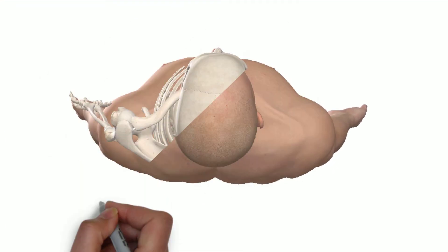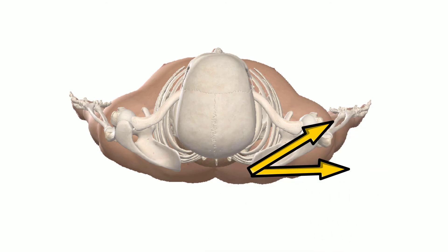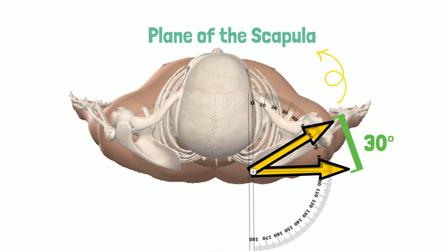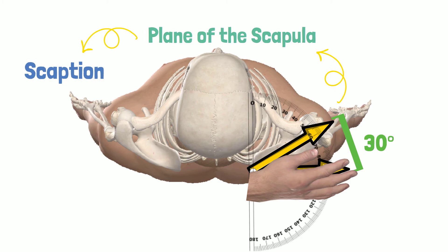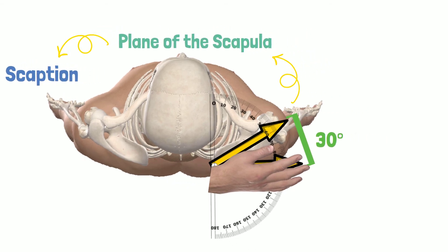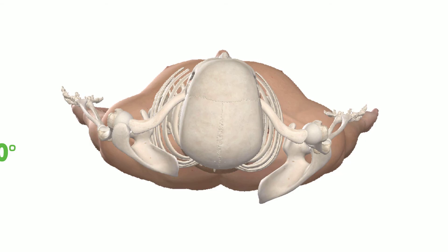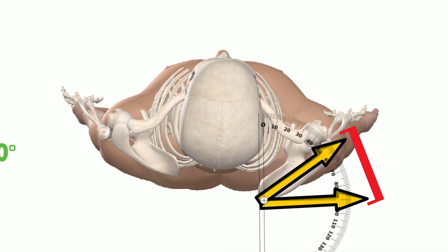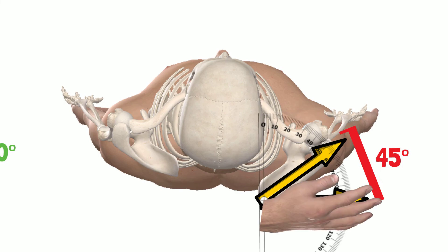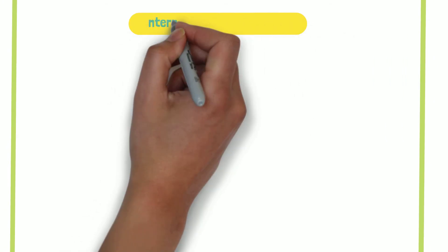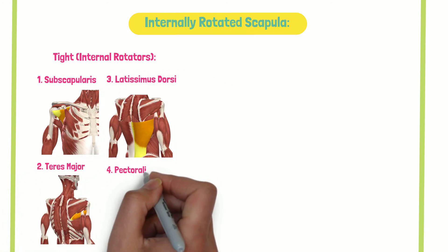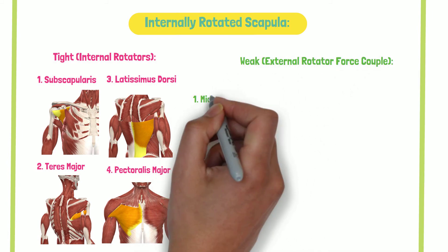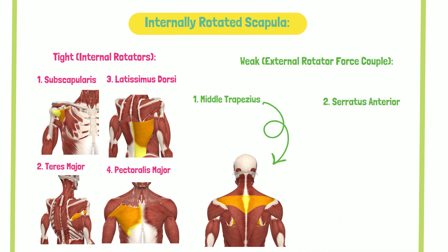Last but not least is the internal-external rotation of the scapula. The typical alignment of the scapula is 30 degrees of internal rotation — we refer to this alignment as the plane of the scapula. Place your hand perpendicular to the ground and observe the angulation between the hand and the infraspinous fossa from the frontal plane. An abnormal position in this case is an excessively internally rotated scapula, with the excessive internal rotation angle being 45 degrees. This alignment can occur secondary to tightness in muscles such as subscapularis, teres major, latissimus dorsi, and pectoralis major, while weakness may be observed in the external rotation force couple, including middle trapezius and serratus anterior.